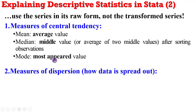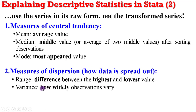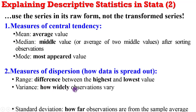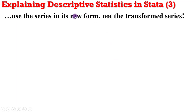Next is information on measures of dispersion — that is, how widely spread out the data is. You can obtain information on the range, which is the difference between the highest and the lowest value. Variance tells you how widely distributed the observations are from one another. And the standard deviation tells you how far the observations are from the sample average. Again, conduct summary statistics on the raw form of the series and not on the transformed nature.